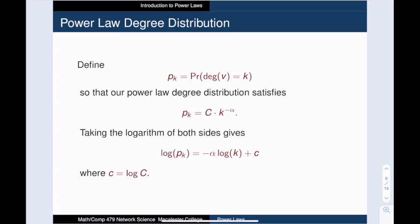Let's talk about why a power law distribution looks like a straight line when we create a log-log plot. Here we are using p sub k to denote the probability that a randomly chosen vertex has degree k.